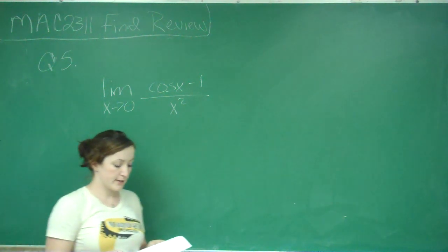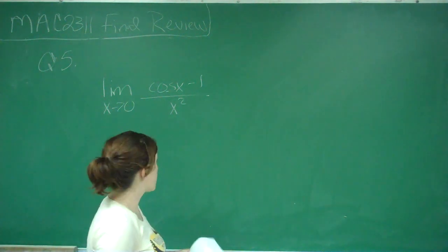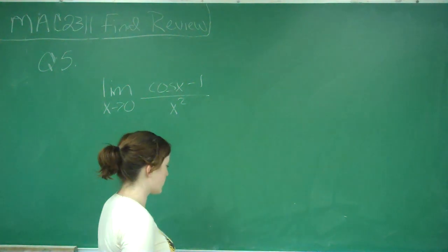This is question number five on your review and it says find the value of the limit as x approaches zero of cosine x minus one over x squared.